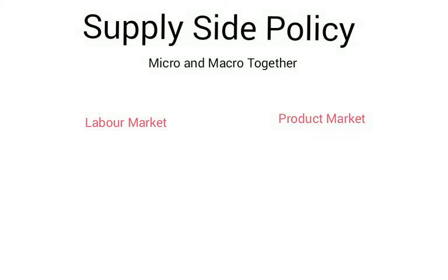It's important in A2 that we also think about supply-side policies, and these are very interesting policies because they combine micro and macro effects, so it's a really good way of demonstrating evaluation and your ability to draw micro and macro concepts together into the same answer.